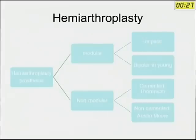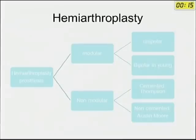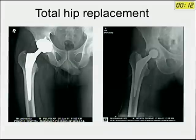Regarding hemiarthroplasty, there are two broad types: modular and non-modular. The modular type includes unipolar and bipolar prostheses. The non-modular type includes conventional cemented Thompson prosthesis or non-cemented Austin Moore prosthesis.